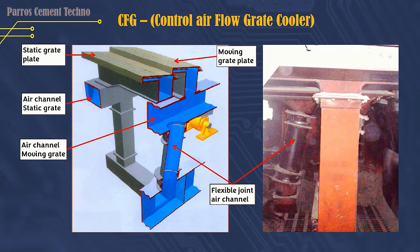This is a sample image of the CFG cooler air duct. It can be seen in the figure that the rows of stationary grate plates and the rows of moving grate plates use separate air ducts. To supply cooling air to the movable grate plate, a flexible joint pipe is used that allows it to move freely without obstacles. The air duct to the static grate plate is connected directly through the air duct to the beam grate plate.